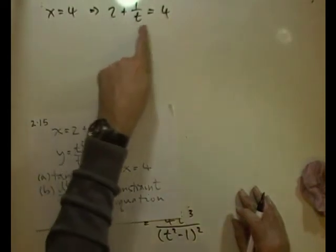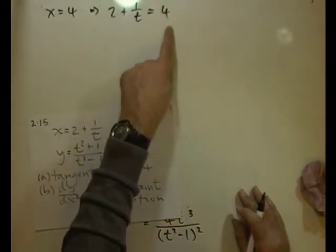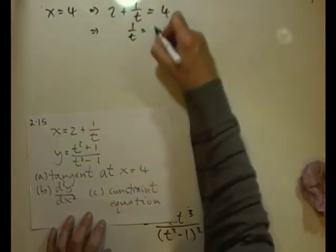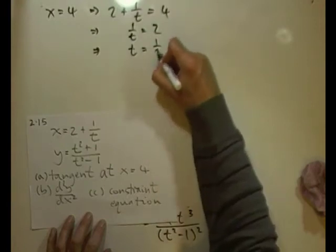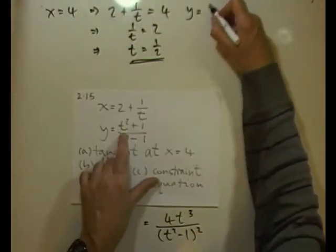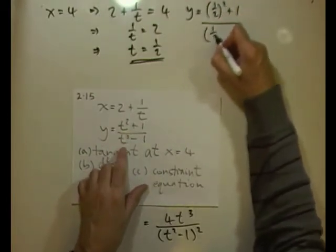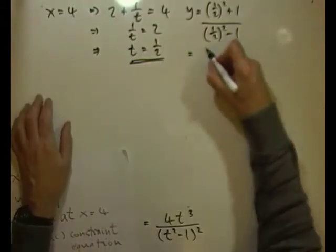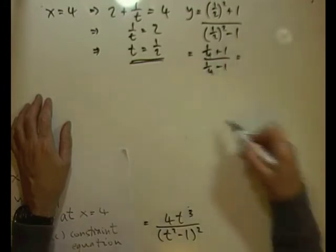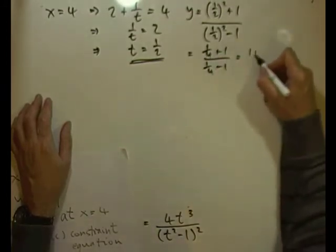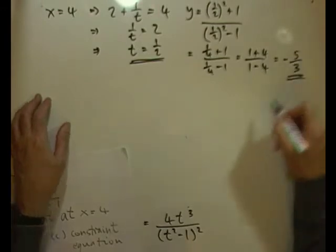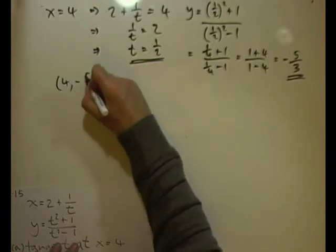Rearranging: 1/t = 2, so t = 1/2. Now substituting into y = (t²+1)/(t²−1): y = ((1/2)²+1)/((1/2)²−1) = (1/4+1)/(1/4−1) = (5/4)/(−3/4). Multiplying top and bottom by 4 gives 5/(−3) = −5/3. So the point is (4, −5/3).